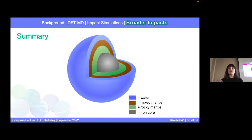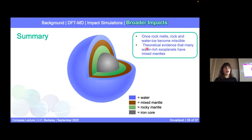So our updated view of maybe some of the water worlds that we're finding out in the galaxy might include this mixed mantle. So to re-summarize our findings in this work, we found that once rock melts, rock and water ice become miscible. And then we provided theoretical evidence that many water-rich exoplanets have mixed mantles and that we should consider these mixed regions when studying these types of water-rich planets.